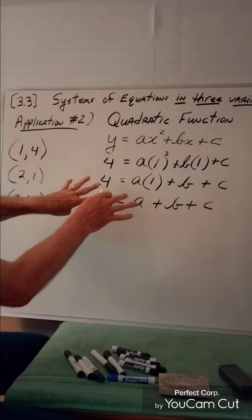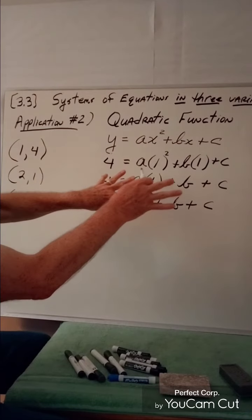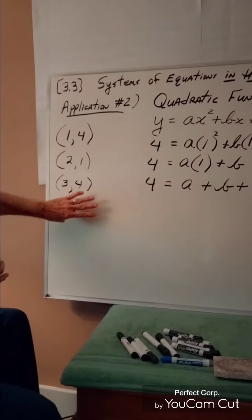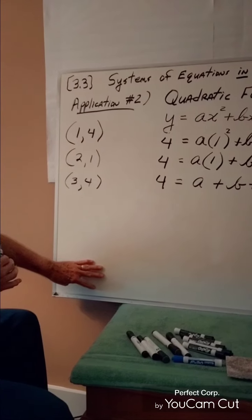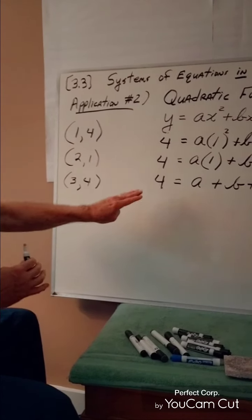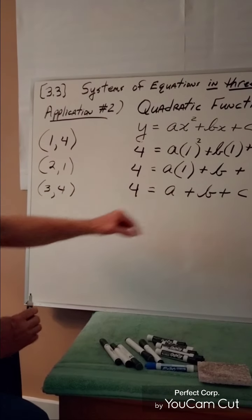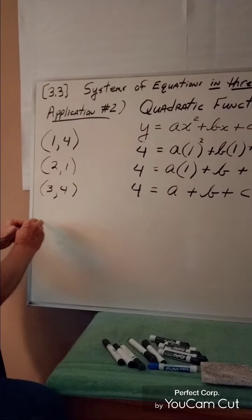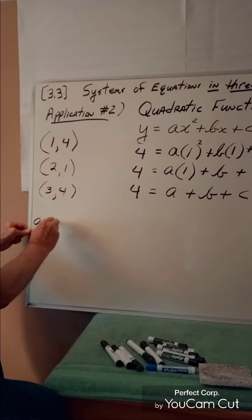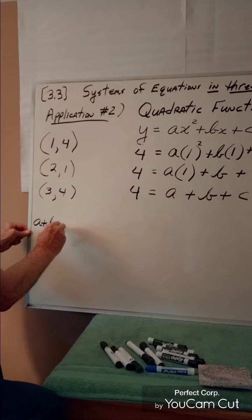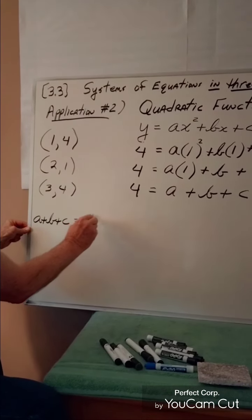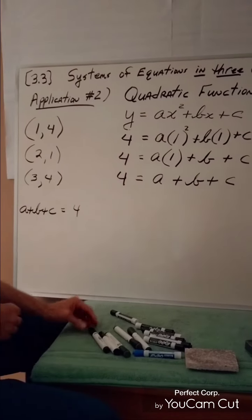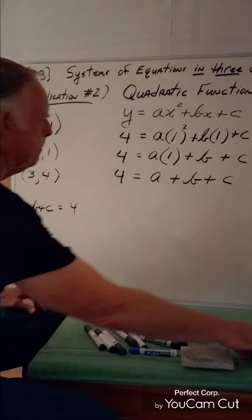Equation number one of our system is a + b + c = 4. I'll write it in standard form with the variable terms on the left: a + b + c = 4.